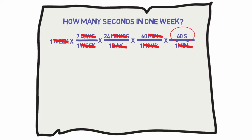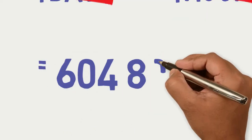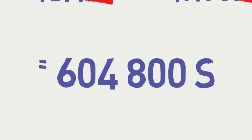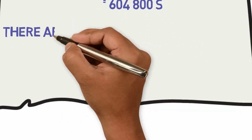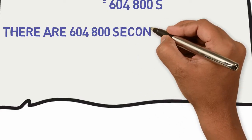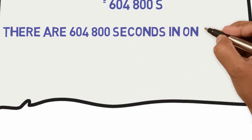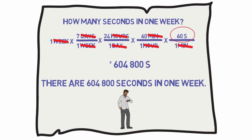In our problem, all of the units cancel out except seconds. Since seconds is our desired answer, we have set the problem up correctly and can continue with our calculation. There are 604,800 seconds in one week. Seconds per week is a straightforward conversion — let's look at a different question that demonstrates that unit analysis is an invaluable tool for solving problems.